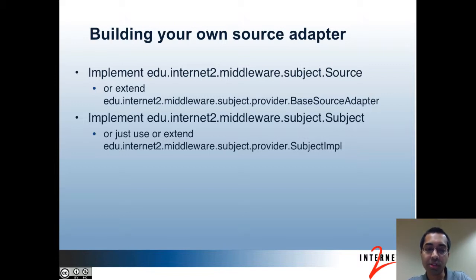The next topic is about building your own source adapter. I'll cover this very briefly. In most cases, if your subject source is an LDAP directory or a relational database, you should be able to use the ones that already come with the Subject API. But if you have a subject source that needs to be accessed through some API, this could be an option. Basically, you would want to implement the source interface or extend the base source adapter class, which would be the recommended way to go. You could also implement the subject interface, though you should probably see if the subject input class already meets your needs, and if not, extend that. That class is fairly generic, also takes care of virtual attributes, and is used by both JDBC source adapters that come with Grouper, and is also extended by the JNDI source adapter.